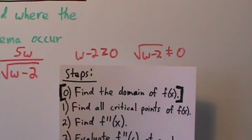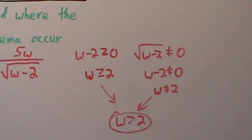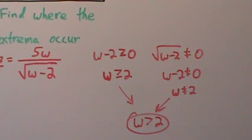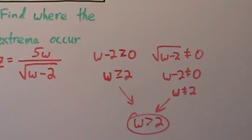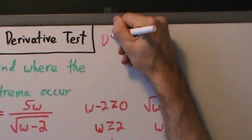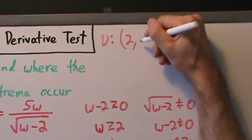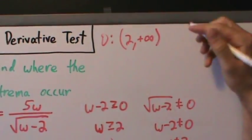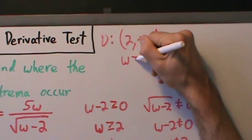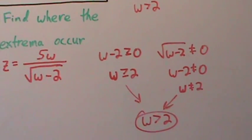Finding the domain is a little more important here because when we find the critical points, remember a critical point has to be in the domain of the original function. We haven't had that problem for the other examples yet because we've been looking at simpler functions. So the domain is (2, ∞), or in other words, w has to be strictly greater than 2.